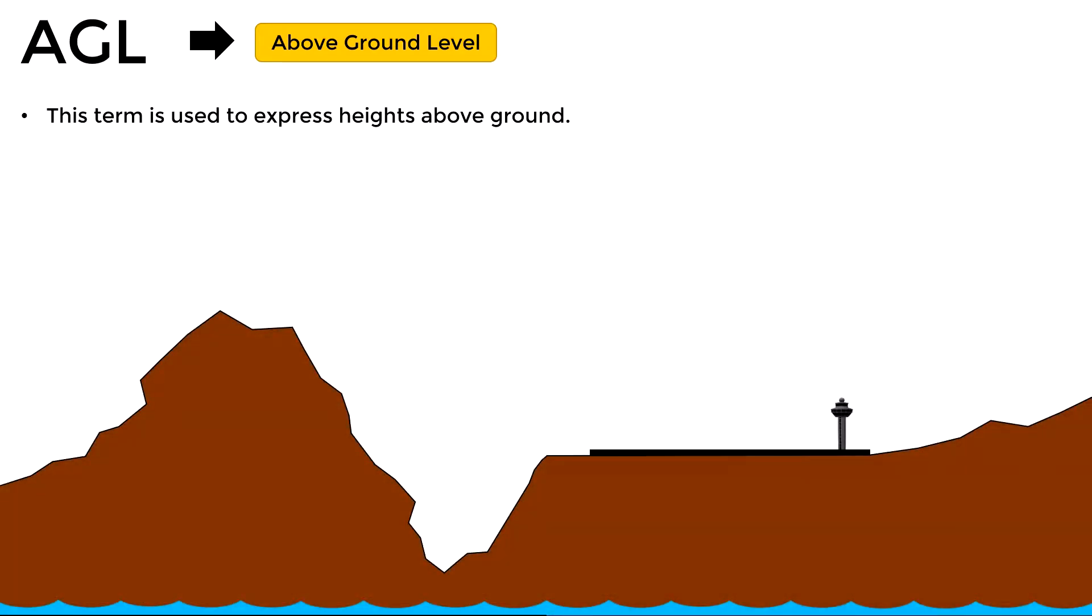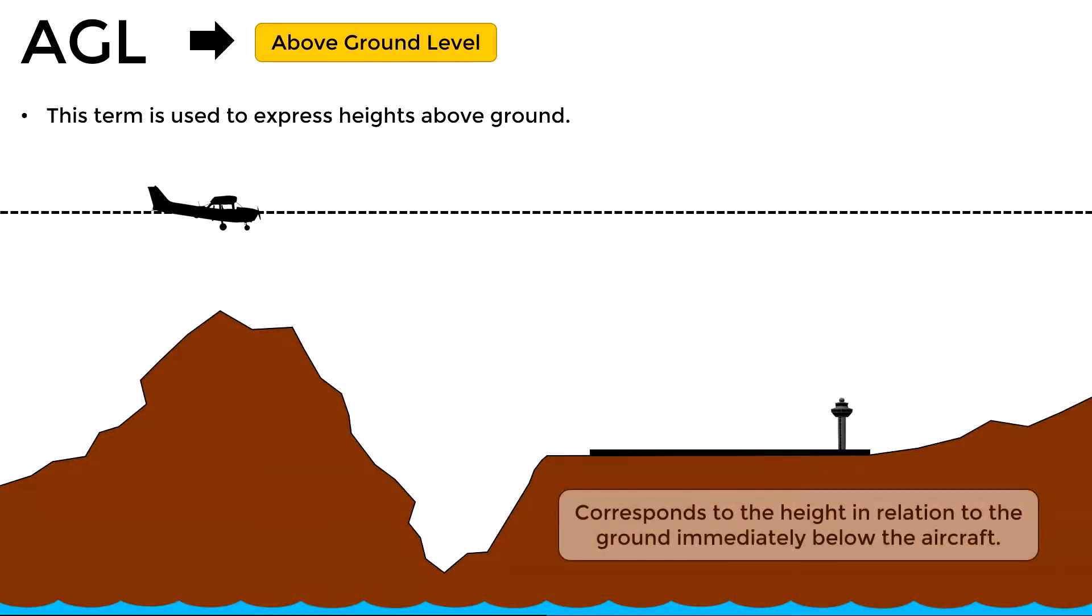We have the abbreviation AGL which stands for above ground level. This term is used to express height above a point on the ground. There's something important to keep in mind with this: it refers to the height in relation to the ground immediately below the aircraft, not the height in relation to the aerodrome level.